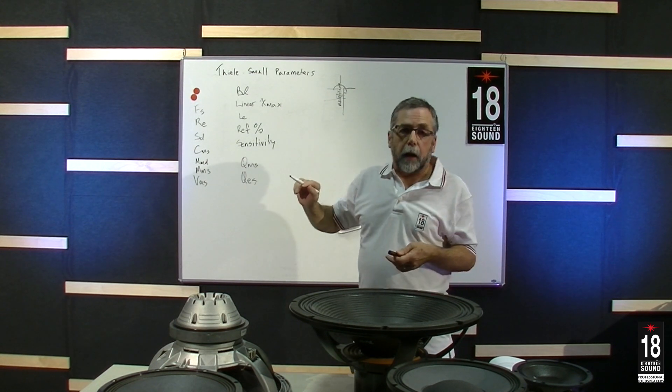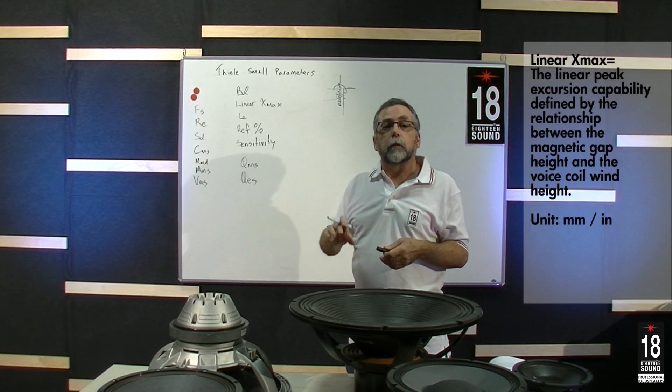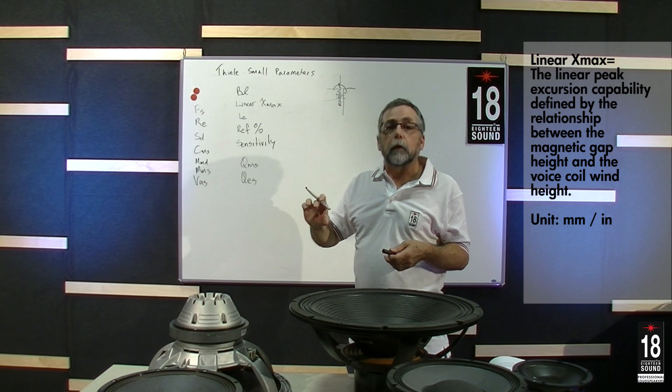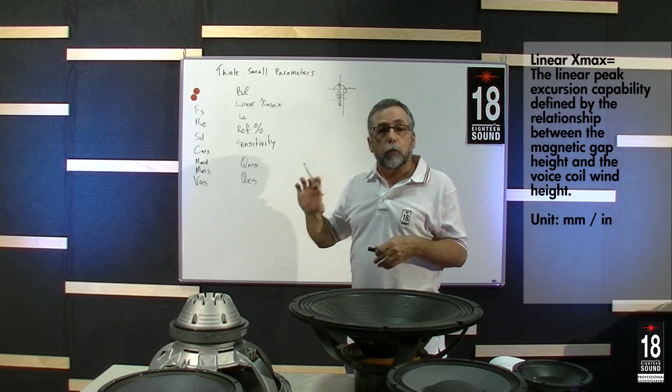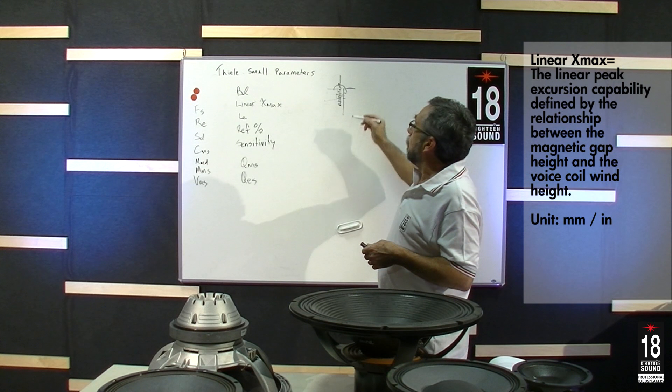The linear X max refers to the relationship between the gap height and its fringe field, and the length of the voice coil, or the height of the voice coil.